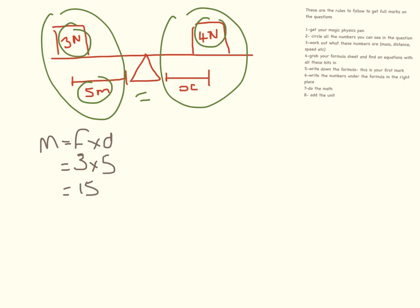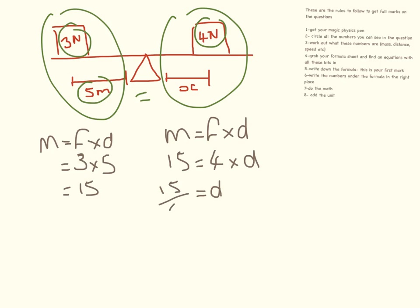Now we know the moment for this half of the seesaw. Because they're balanced, it has to be the same on the other side. Moment equals force times distance. We know the moment is 15. The force is 4, and the distance is what we're working out. If we rearrange the equation, we do 15 divided by 4, which equals 3.75 metres.